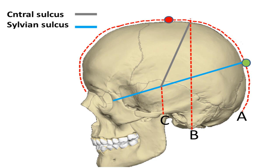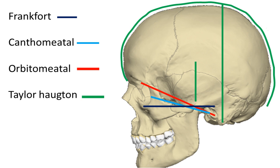If we connect the green point to the canthus point, this is the direction of the sylvian fissure. Now we have finished all the craniometric lines of the lateral surface of the skull. Thank you for watching!